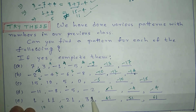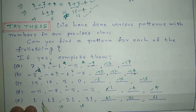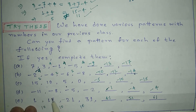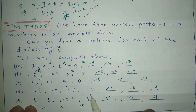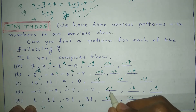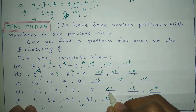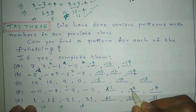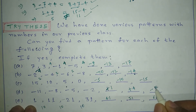In question D, we can observe that 3 is being added continuously: minus 11 plus 3 equals minus 8, plus 3 equals minus 5, plus 3 equals minus 2. So when we add 3 to minus 2, it gives us plus 1, then plus 4, then plus 7.